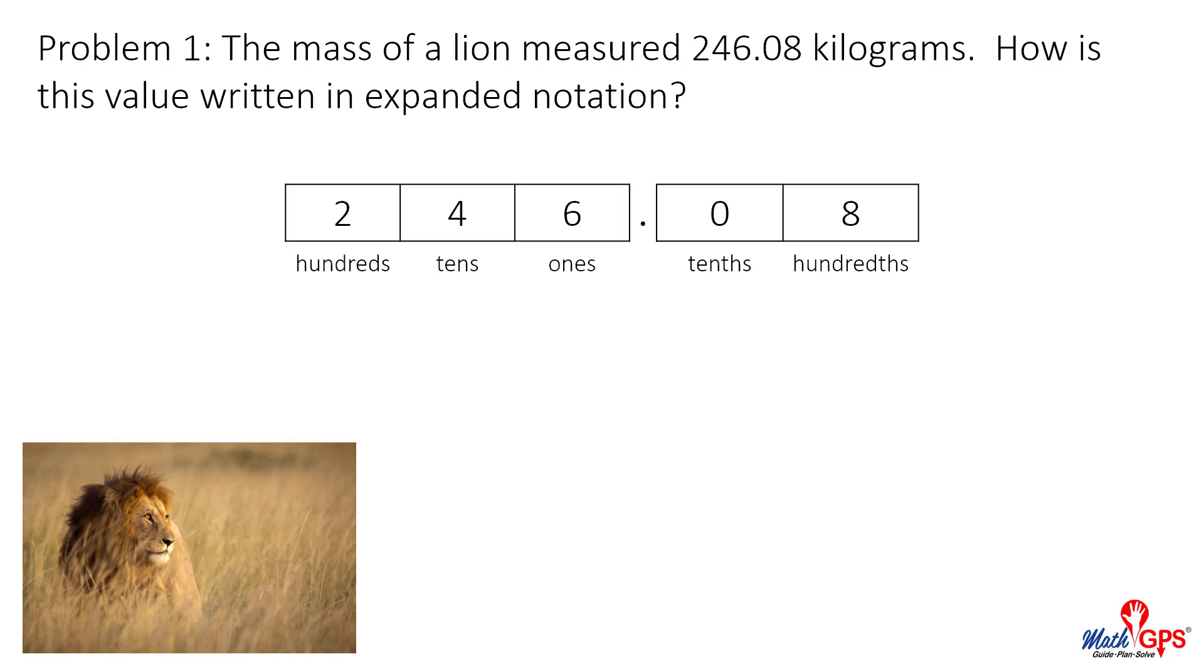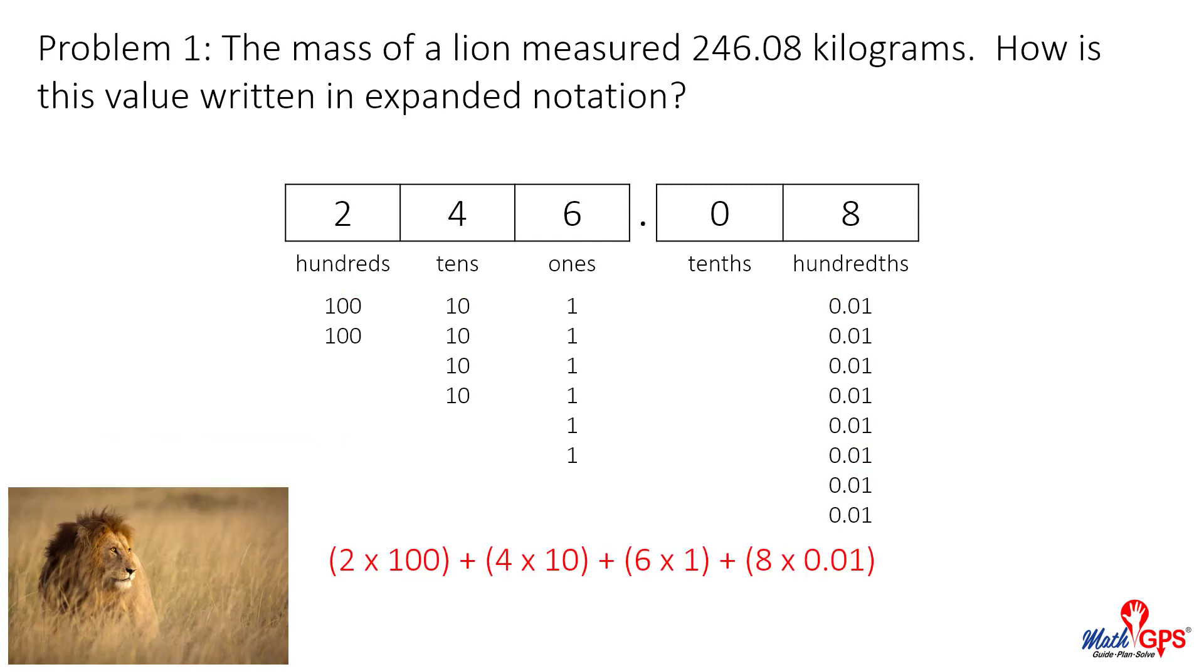The value is shown in a place value model. The value of each digit is represented. Using expanded notation, the value is two times one hundred, plus four times ten, plus six times one, plus eight times one hundredth.